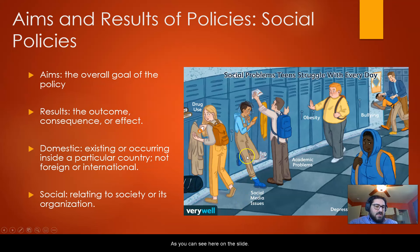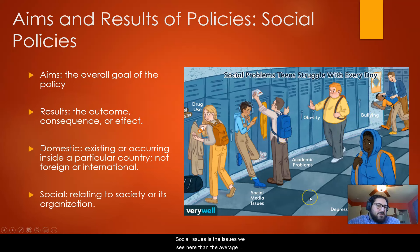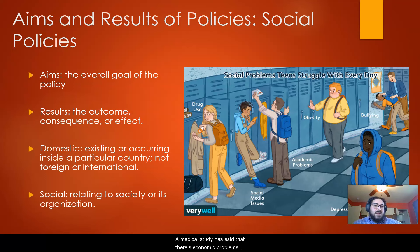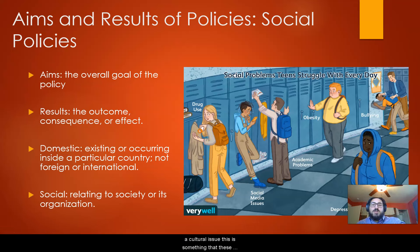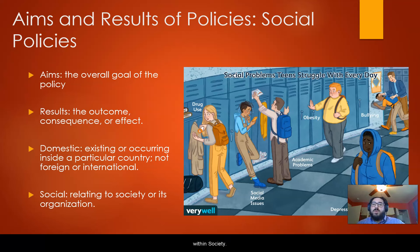Social issues are the issues seen here that the average teen, according to a medical study, struggles with: academic problems, body dysmorphia, bullying, depression, and drug use. All of these are considered social issues, not cultural issues — they are things individuals struggle with in society.